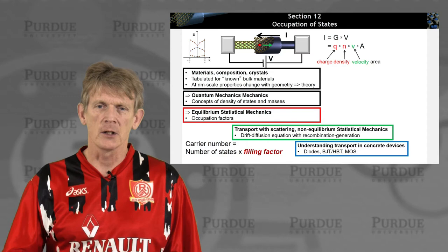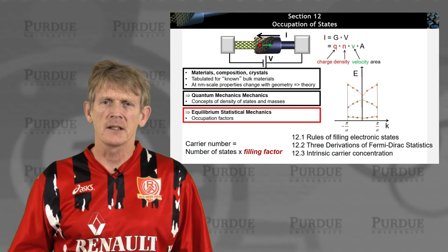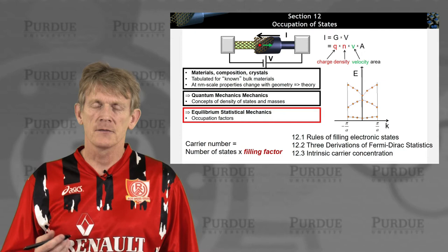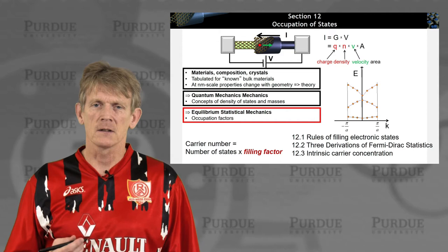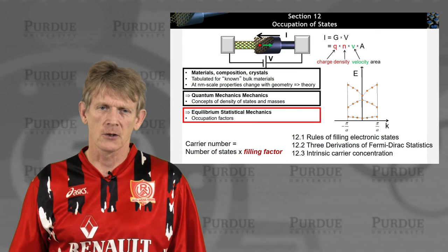In the previous section, we calculated band structure — this pictogram is really familiar to you. In the first section now, I'm going to talk about the rules of filling of these electronic states, and then we'll go into the Fermi-Dirac statistics and some calculation of intrinsic carrier concentrations.